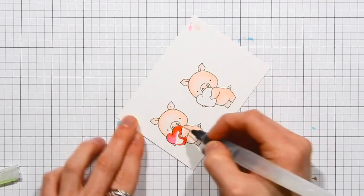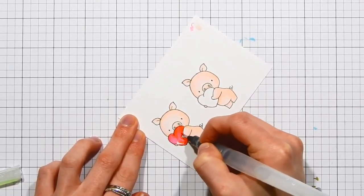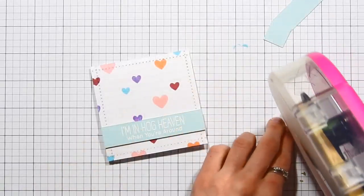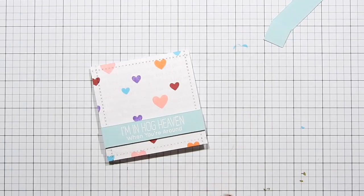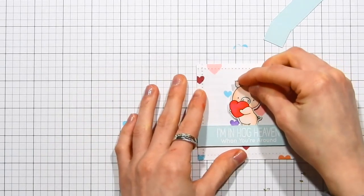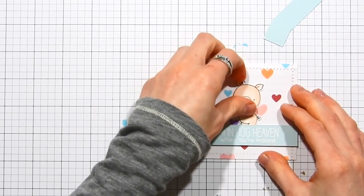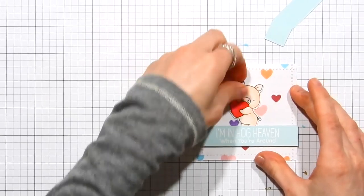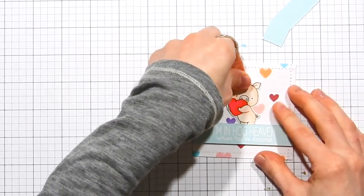I'm going to go ahead and pop this up onto my card. I added some stitching details using my favorite things border die, and I also heat embossed the Hog Heaven sentiment onto a piece of sea glass cardstock from Simon Says Stamp, popped that up onto my card.